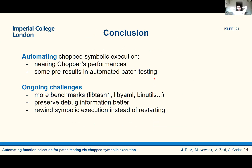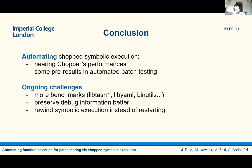In conclusion, we have successfully automated chopped symbolic execution, nearing Chopper's performance without the need for user input, and we have some preliminary results in automated patch testing. Ongoing challenges include adding more benchmarks such as binutils, writing drivers for LibTSN1 and LibGAML, preserving debug information better, because sometimes targets are not reachable due to debug information lost at compile time. Finally, in order to scale better especially for longer timeouts, we would like to rewind symbolic execution to the snapshot instead of restarting the whole analysis.